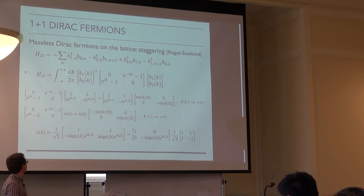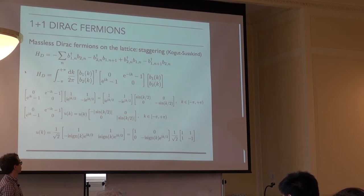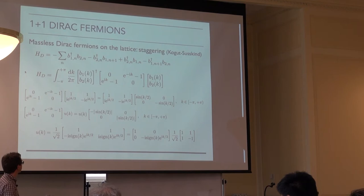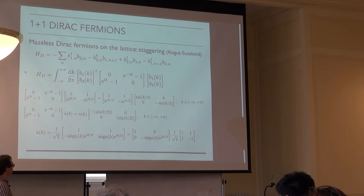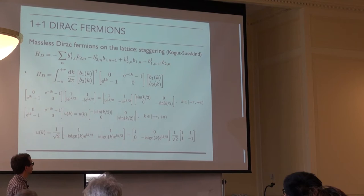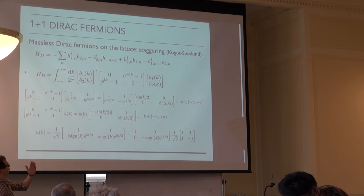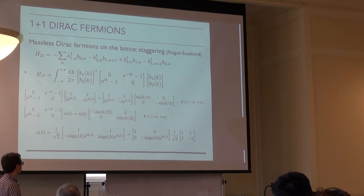Let's get to some formulas. The first example is 1+1D Dirac fermions, using a staggered formulation keeping two degrees of freedom per site. In momentum space the single-particle Hamiltonian looks like this. Usually you would write down eigenstates — the right-mover and left-mover, with energies sine(k/2) and minus sine(k/2) — but these don't have definite energy: positive energy for positive k and negative energy for negative k, or vice versa. So we want a basis that clearly distinguishes negative and positive energies. The proper eigenvectors in momentum space can be written as a diagonal matrix times Hadamard.